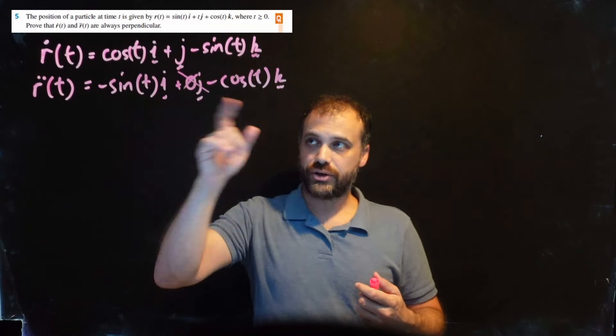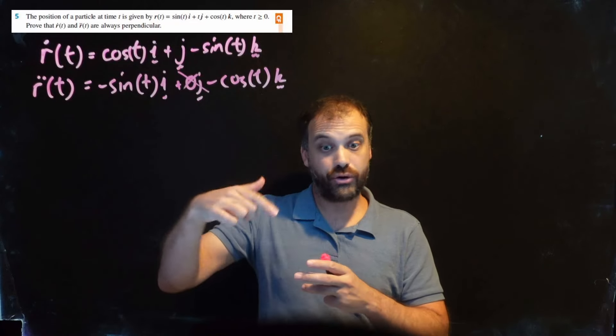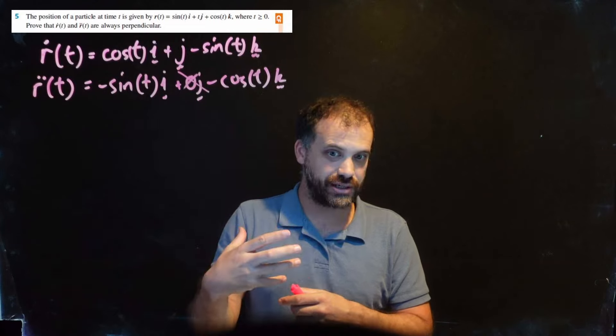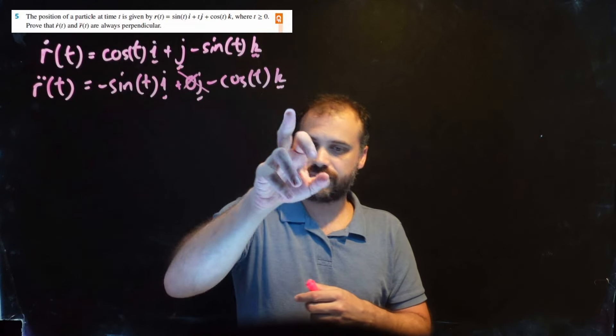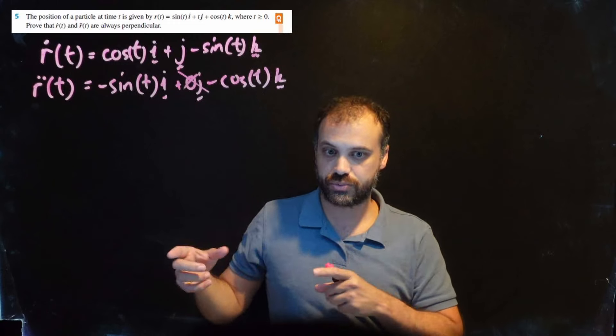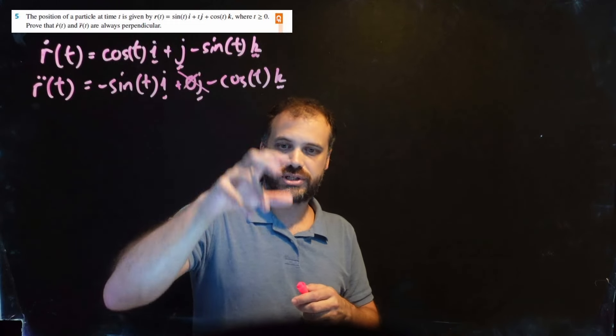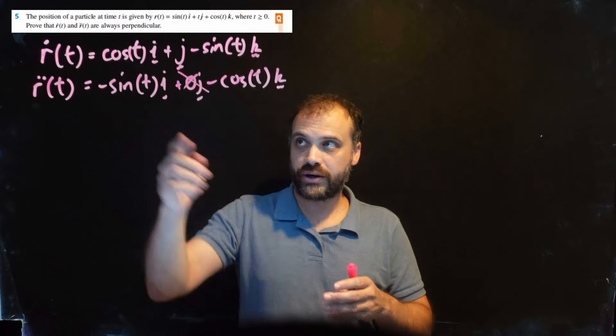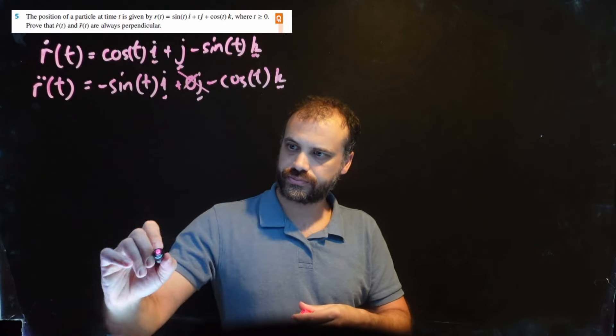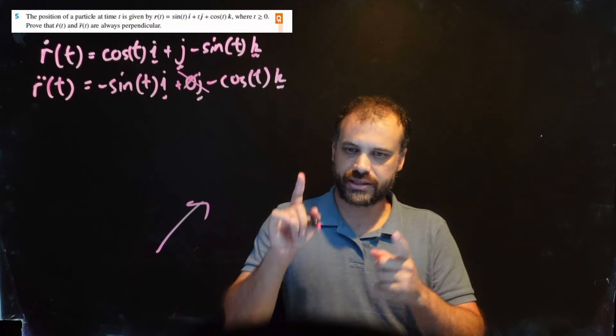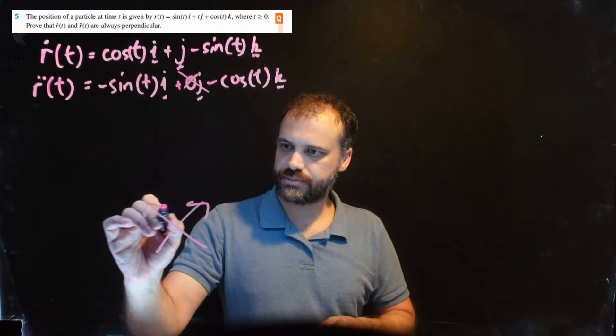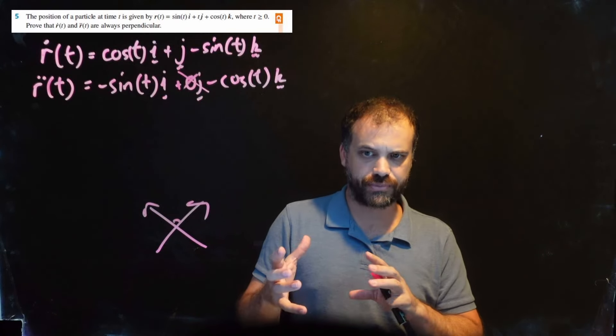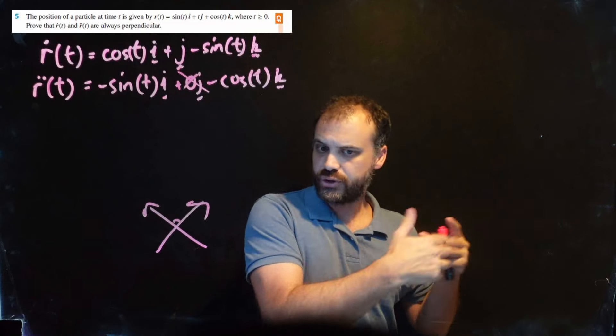This is a velocity vector that changes over time depending on the value of t. This is an acceleration vector that changes with time. If we put in different t values, we get different things. What they're saying is that whatever direction this velocity vector is pointing in, the acceleration vector will always be pointing at a 90 degree angle. That does happen with some forms of motion.